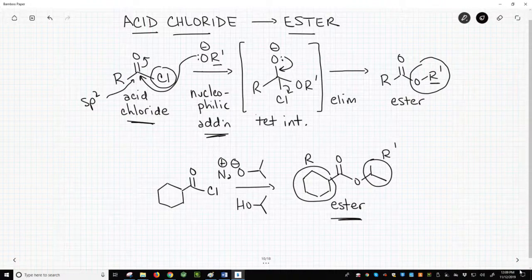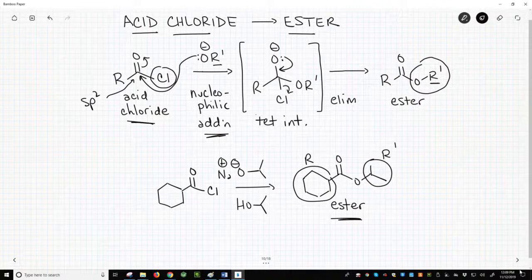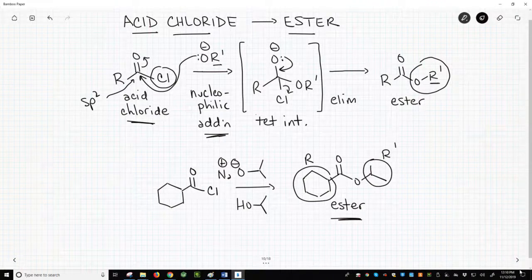Acid chlorides are reactive, flexible functional groups for making acid derivatives. To make an ester, we treat an acid chloride with an alkoxide. The ester forms through an addition-elimination reaction.